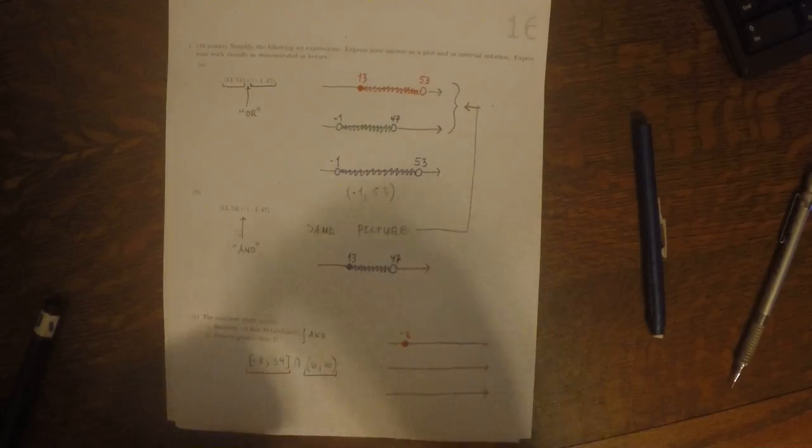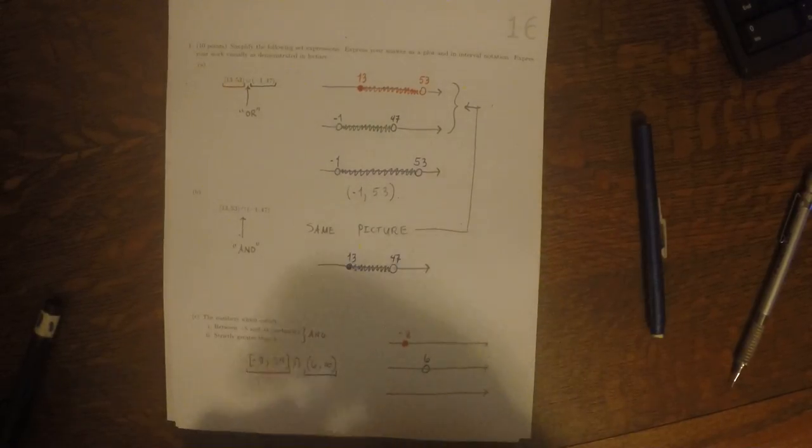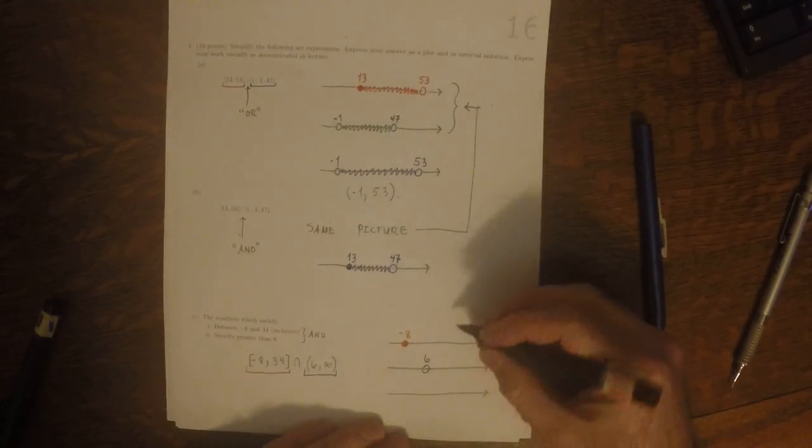Of the remaining, 6 is the smallest and it's open. Of the remaining, 34 is the smallest and it's closed.